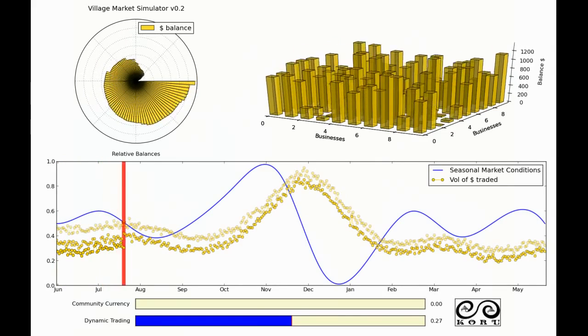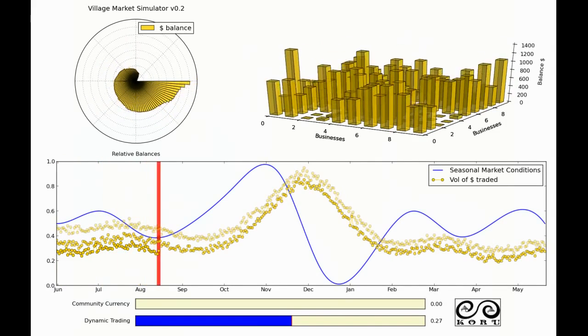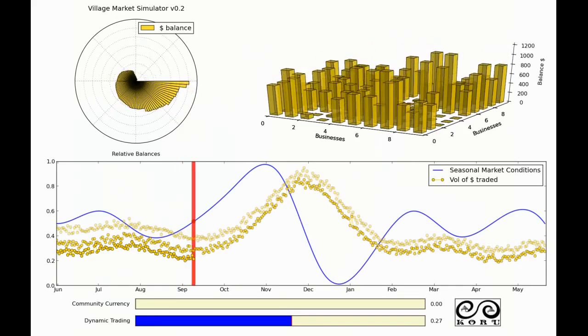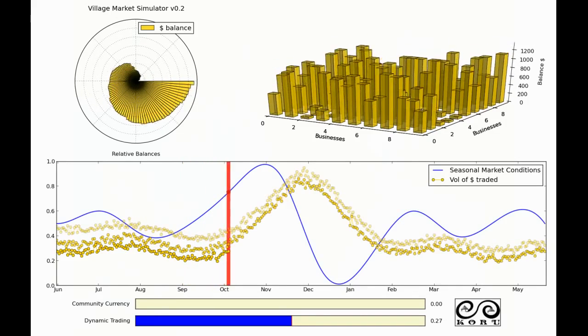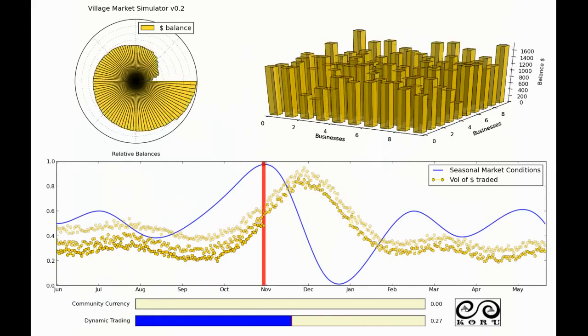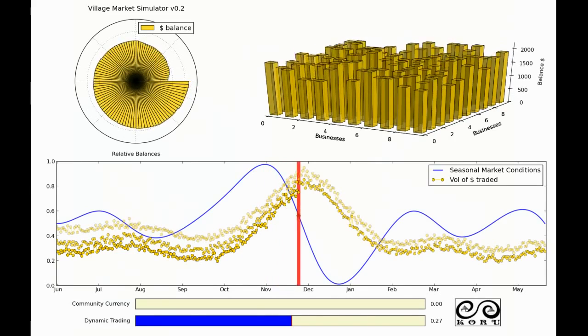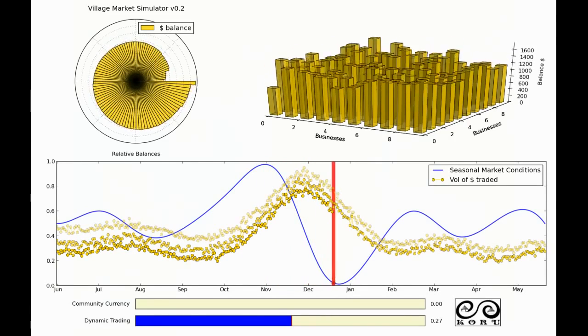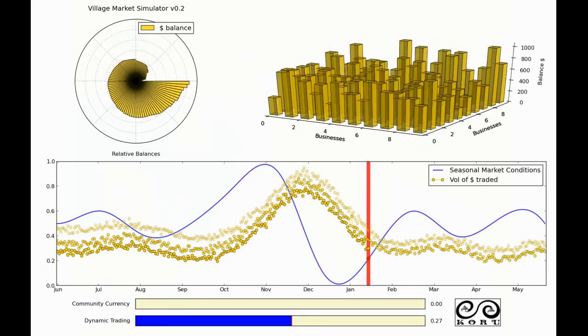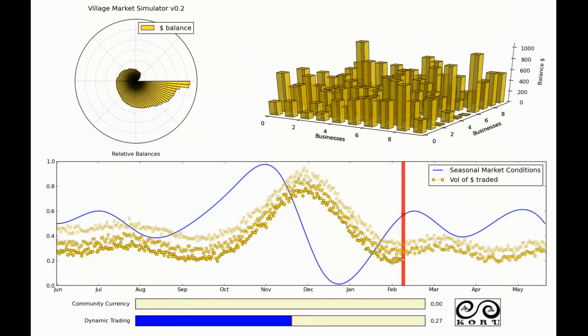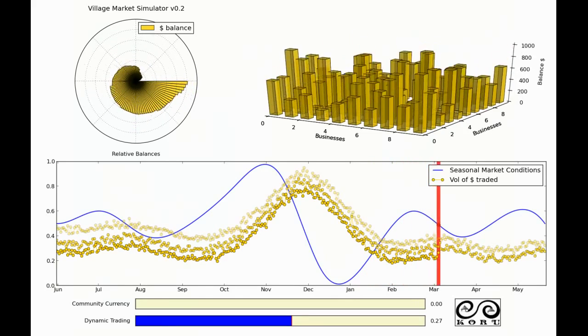So as time goes on we can see in yellow plotted here the relative amount of trade throughout the year. So as there's more money in the system people trade a bit more. And as there's less money in the system people trade a bit less. And the net effect over the entire year is that by the end of the year there's a little bit less money in the system than we started with.